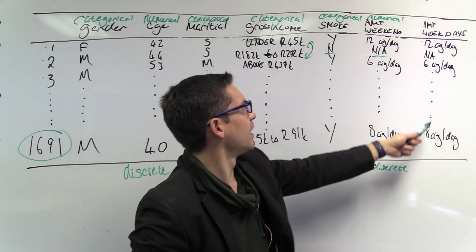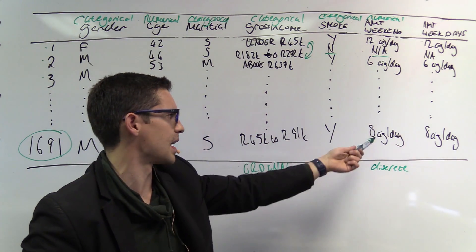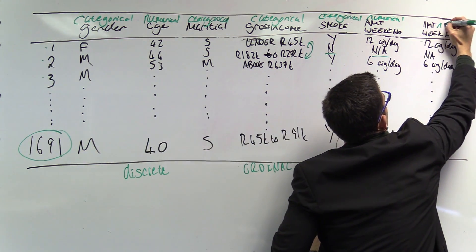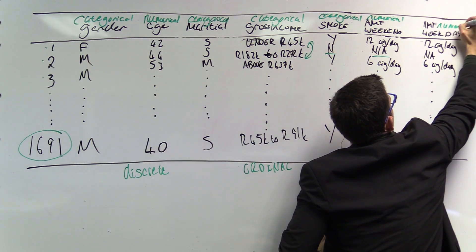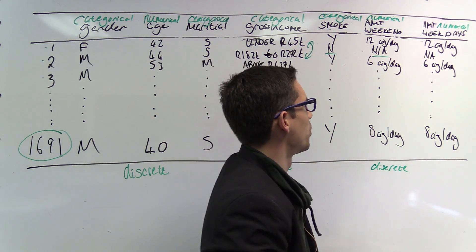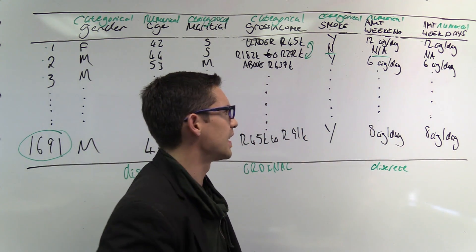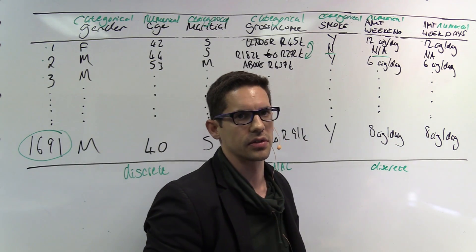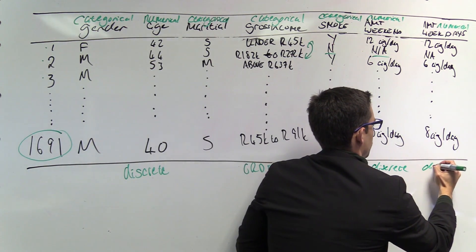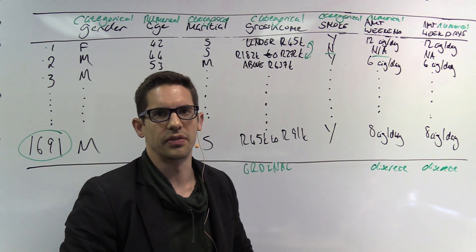The last variable is the number of cigarettes smoked on weekdays — the same type as the weekend variable. This is again numerical, because the values are numbers we can add, multiply, or operate on. The NA values can simply be removed or replaced with zero. With no decimal places present, this is also numerical discrete.